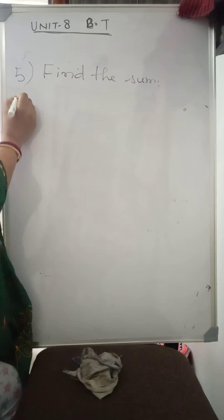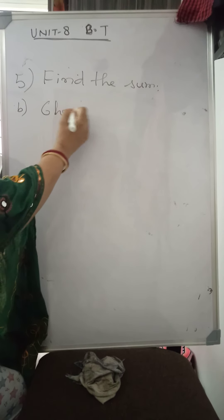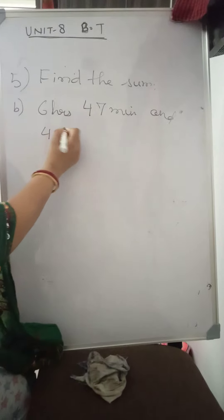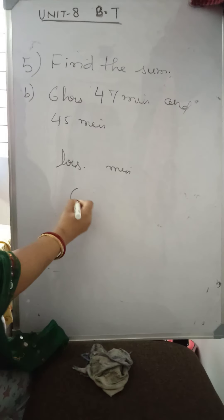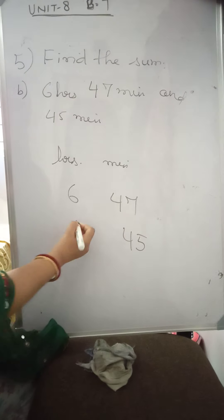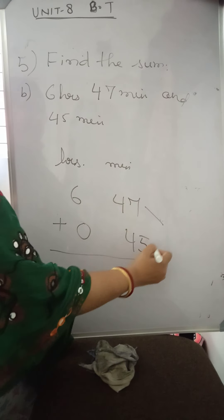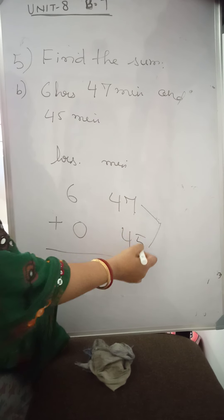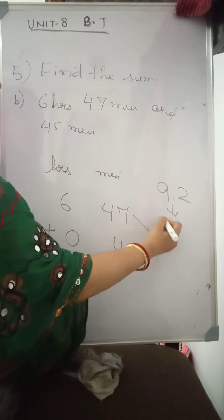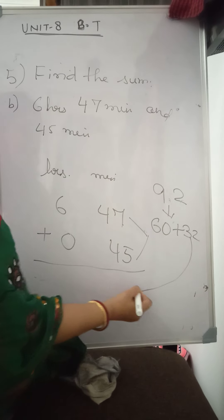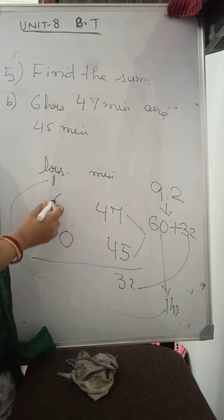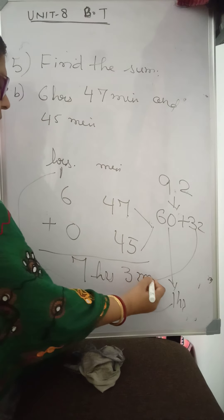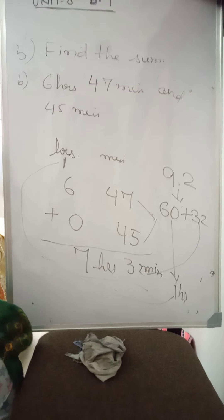Question B: Six hours forty-seven minutes and forty-five minutes. Arrange in column of hours and minutes. Forty-seven plus forty-five is ninety-two. Since ninety-two equals sixty plus thirty-two, write thirty-two minutes and carry one hour. Six plus one is seven. So the answer is seven hours thirty-two minutes.